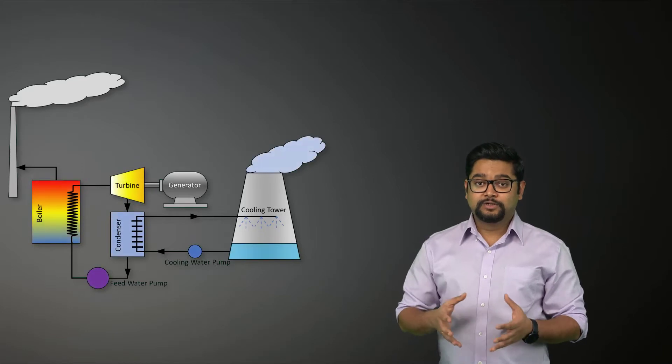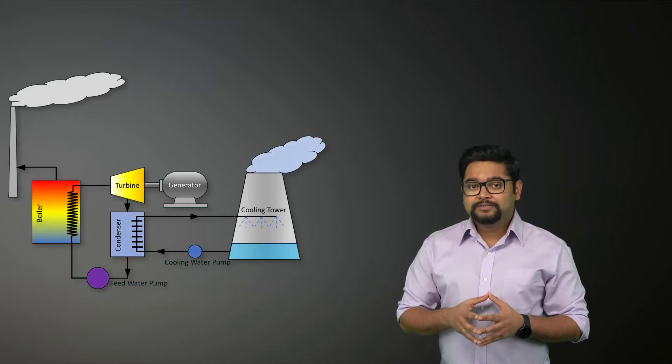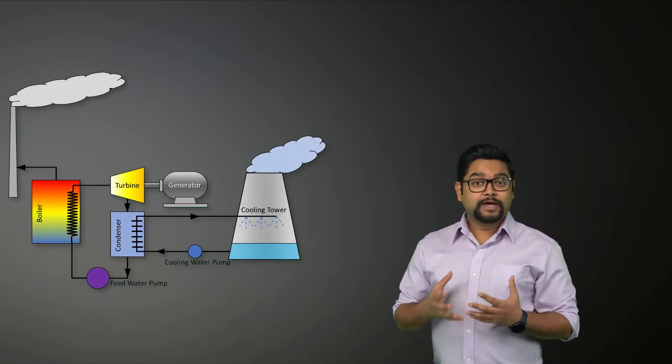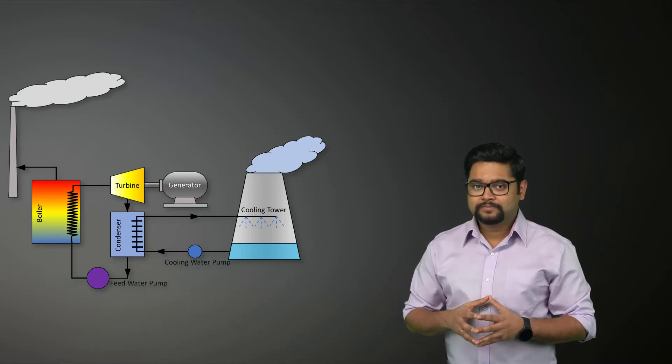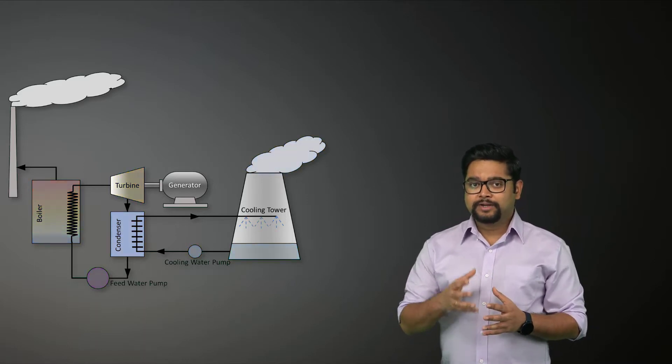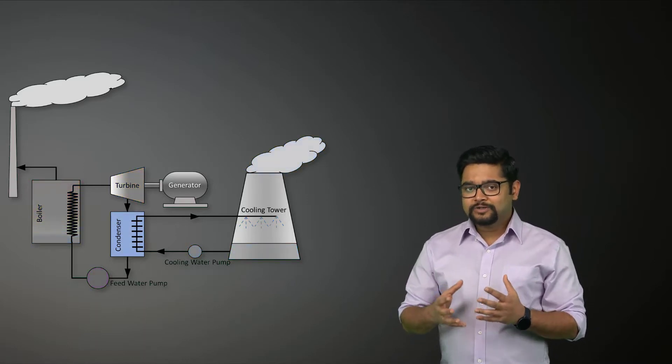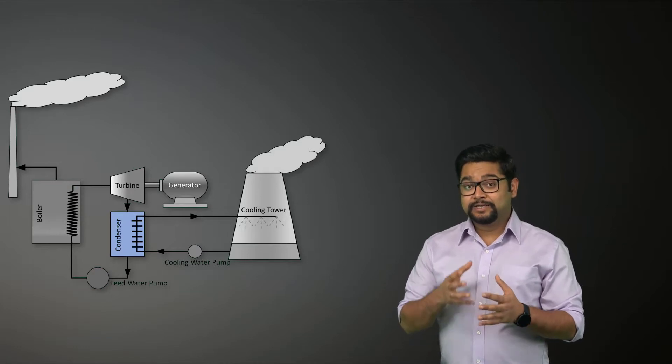After the steam has expanded through the turbine, it must be condensed to liquid water before it can be pumped back into the boiler. This is accomplished by a condenser where cooling water cools and condenses the exhaust steam.